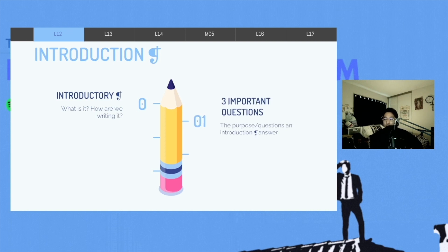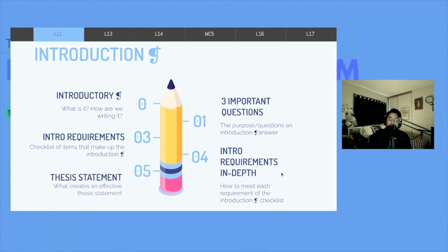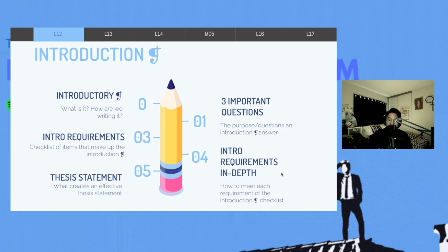Up next, we're going to look at these three important questions that help us answer and support in defining our literary movement. Take a look at those intro requirements, this checklist of items that make up the introduction, and look at those in depth and how we can meet each of those criteria. And lastly, thesis statement. Each introduction paragraph has one, and we'll take a look at what makes an effective thesis statement.